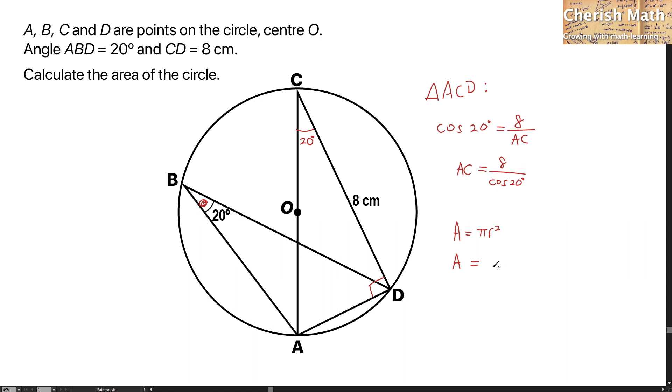And taking one half of this value, that would be 4 over cos 20 degrees, and square it up. So, the value of the area of this circle is 56.9 centimeter square.